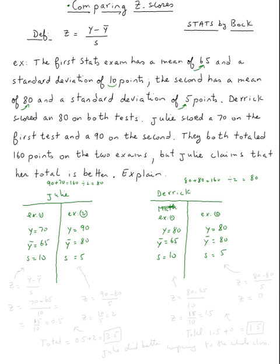So let's do Julie first. For Julie, for exam one, the z-score is y minus y-bar over s, which is 70 minus 65 over 10. Now for the second one, for exam two, z equals 90 minus 80 over 5. We're going to use a calculator very soon.